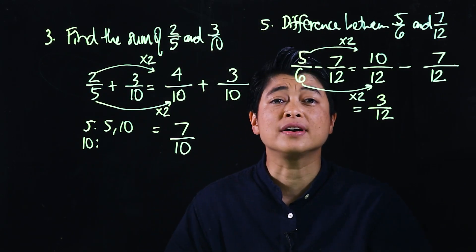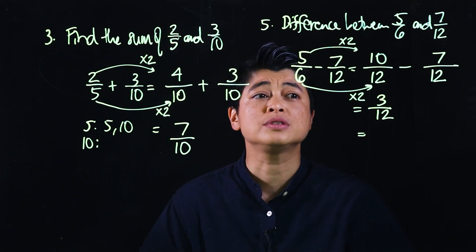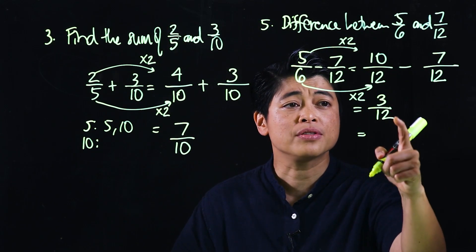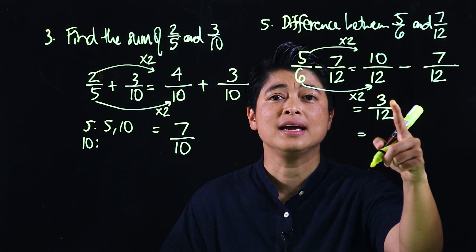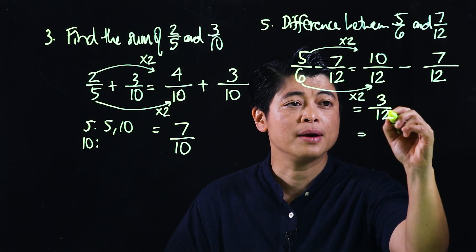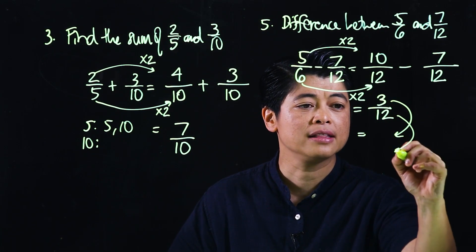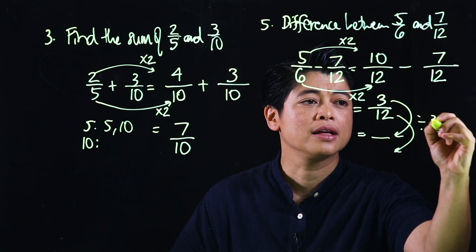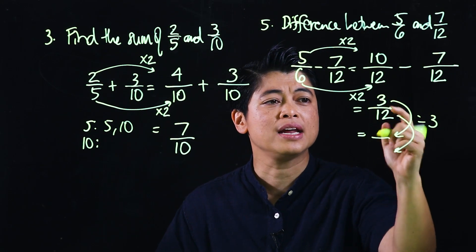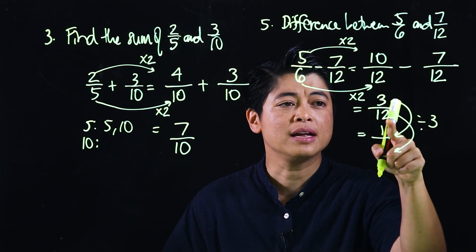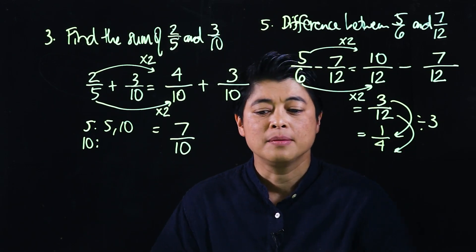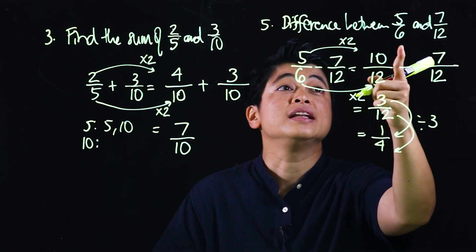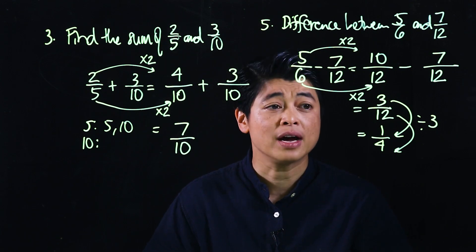However, this is not in simplified or reduced form. We know that both of those can be divided by 3. If I divide by 3, that's 1. If I divide by 3, that's 4, making the difference between 5/6 and 7/12 to be one-fourth.